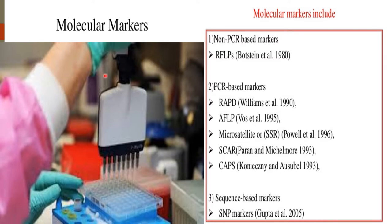Molecular markers do not represent target genes themselves but act as signs or flags. Genetic markers located in close proximity to genes, that is tightly linked, may be referred to as gene tags. They do not affect the phenotype of the trait of interest because they are located only near or linked to genes controlling the trait. Genetic markers were originally used in genetic mapping to determine the order of genes along chromosomes.